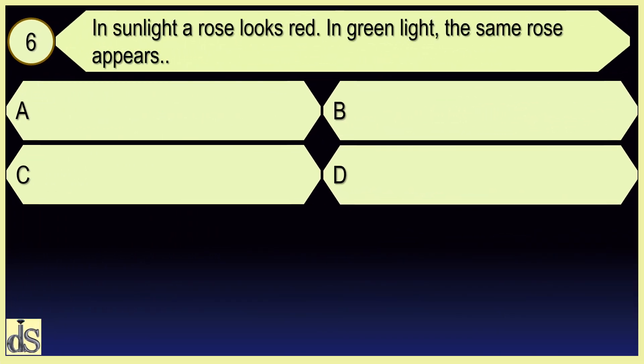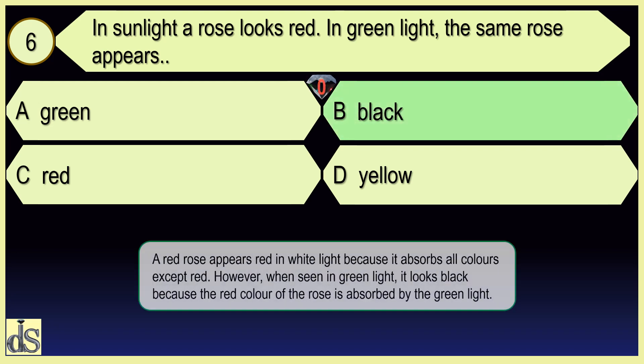In sunlight a rose looks red. In green light the same rose appears black.